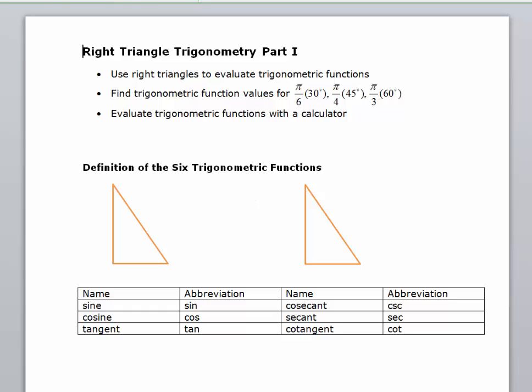We want to talk about breaking up a triangle into the different parts. Generally, we name the angles of a triangle with capital letters. Often we use A, B, and C. You don't have to use A, B, and C, but that's common. When you label a right triangle, generally we name the right angle C.